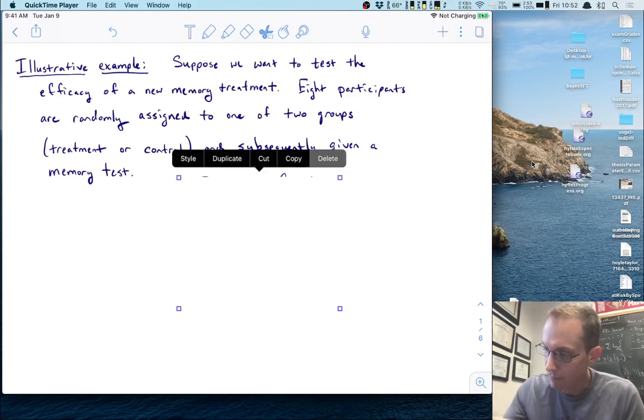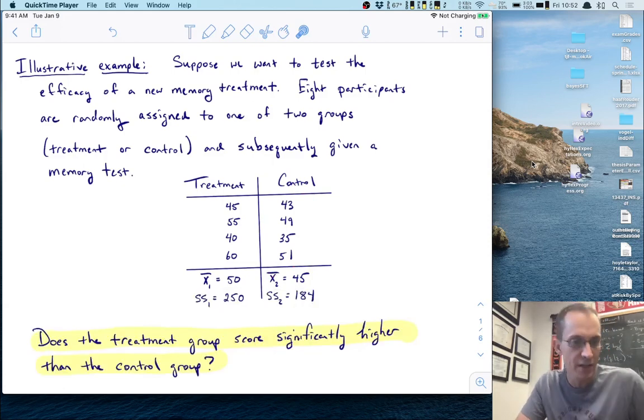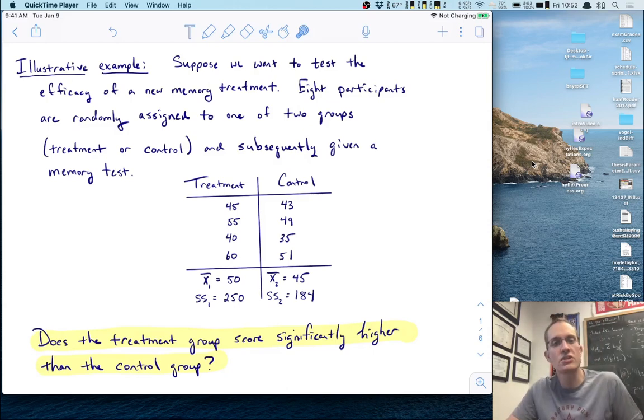Here's some summary data. We have our eight participants randomly assigned to these two groups. The treatment group has a mean of 50 and SS of 250. The control group has a mean of 45 with an SS of 184. Our question is does the treatment group score significantly higher than the control group? This is a research question that we will convert to a statistical question and try to answer using our statistical methods.